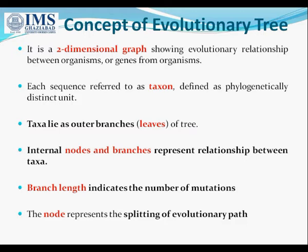The point to be noted is that closely related taxa are found in neighboring branches. The branch length indicates the number of mutations, i.e., a measure of evolutionary time before the next level of separation. The node represents the splitting of evolutionary path of the gene into two different species that are reproductively isolated.